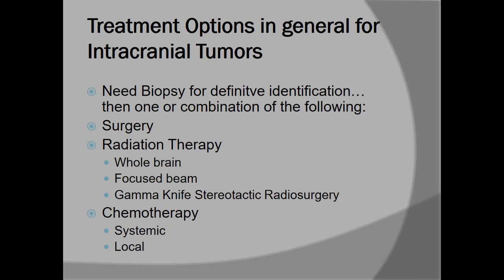The surgical treatment options for intracranial brain tumors start with needle biopsy. Then we can have surgery, which can be of different types: complete excision, subtotal excision, decompression, or simple biopsy. We can also go for radiation therapy — such as whole brain radiation, focused beam radiation, or gamma knife stereotactic radiosurgery — and chemotherapy.